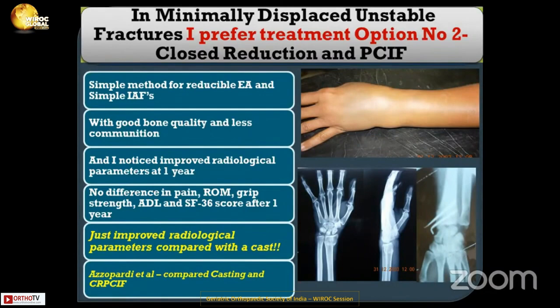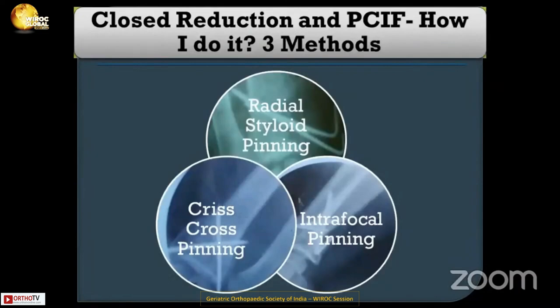Option two: close reduction and percutaneous fixation. This is a simple method for reducible extra-articular and simple intra-articular fractures where bone quality is good and less comminution. I noticed improved radiological parameters at the end of one year, but there is no difference in pain, range of motion, grip strength, ADL, and SF-36 after one year. It simply improves the radiological parameters compared with the cast. I use three techniques for percutaneous fixation: radial styloid pinning, criss-cross pinning, and intrafocal pinning.